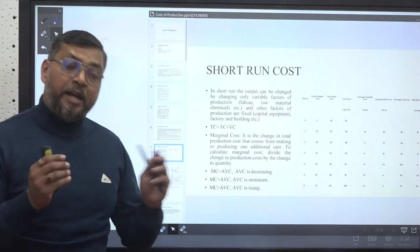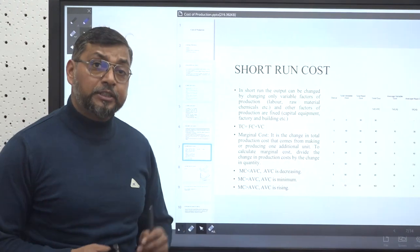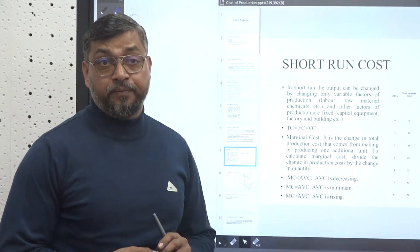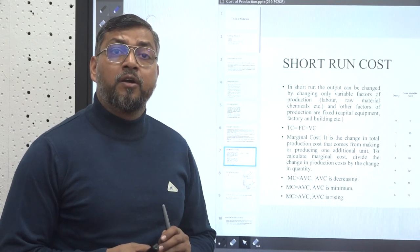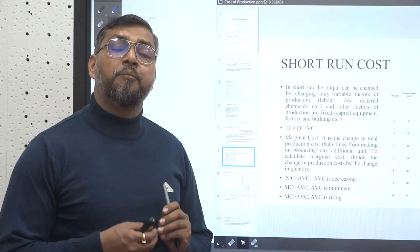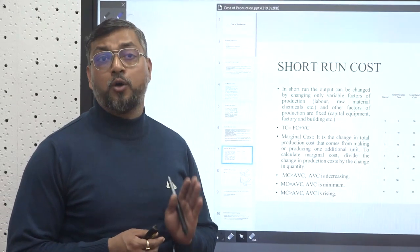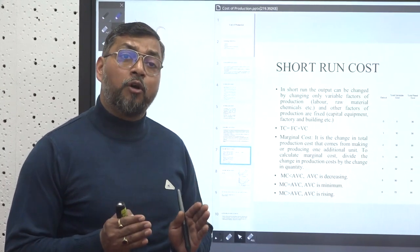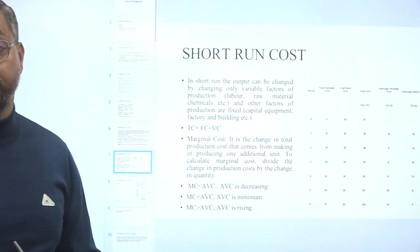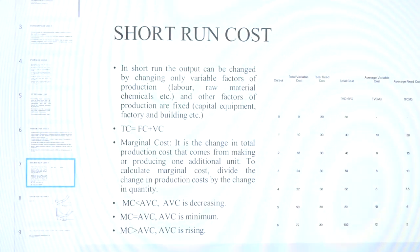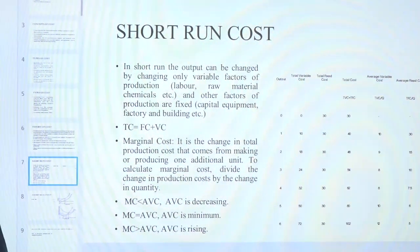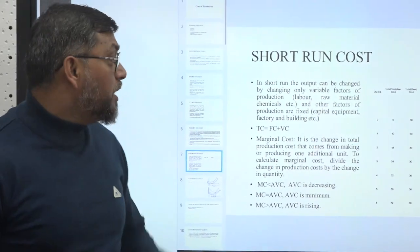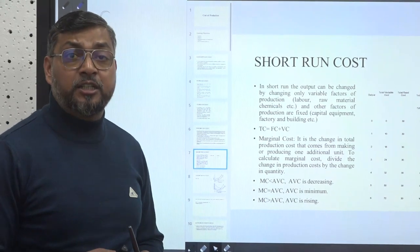Now let's discuss short run and long run costs. There are two time frames where production takes place. Short run is defined as a time period where we are able to vary only a few factors of production while the majority remain fixed — so it has both fixed and variable factors of production. Long run is defined as a time period where all factors of production can be changed, so in the long run all factors of production are variable.